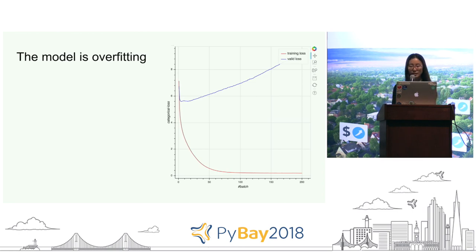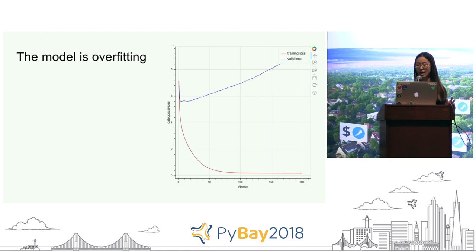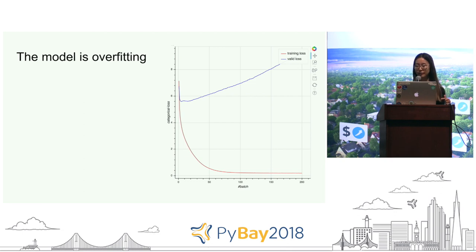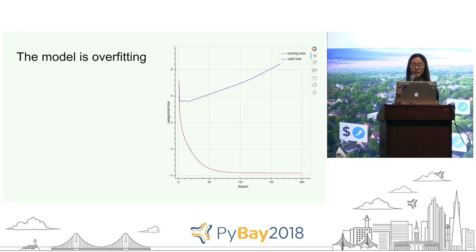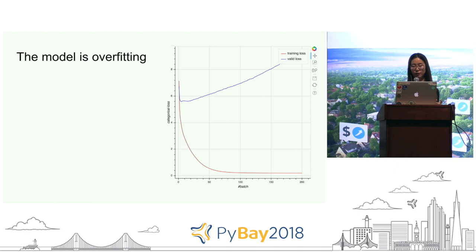Looking at the loss graph: the training loss (red line) shows how badly the model is doing on training data — the images we fed the model to train it. The red line is really low, meaning it predicts really well on training data. But if you feed the model an unseen picture, the blue line is really high, meaning it's doing really badly on images it's never seen before. This is not what we want — when we train a machine learning model, we want it to perform well on data it's never seen.